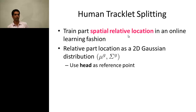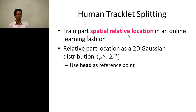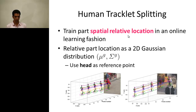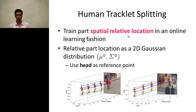We find the relative part location and model it for all parts using a 2D Gaussian model, using the head location as a reference point to find the distribution of position of each part. For consistent parts like head and shoulders we have low variation, while for parts like hands and feet we have high variance in this distribution.